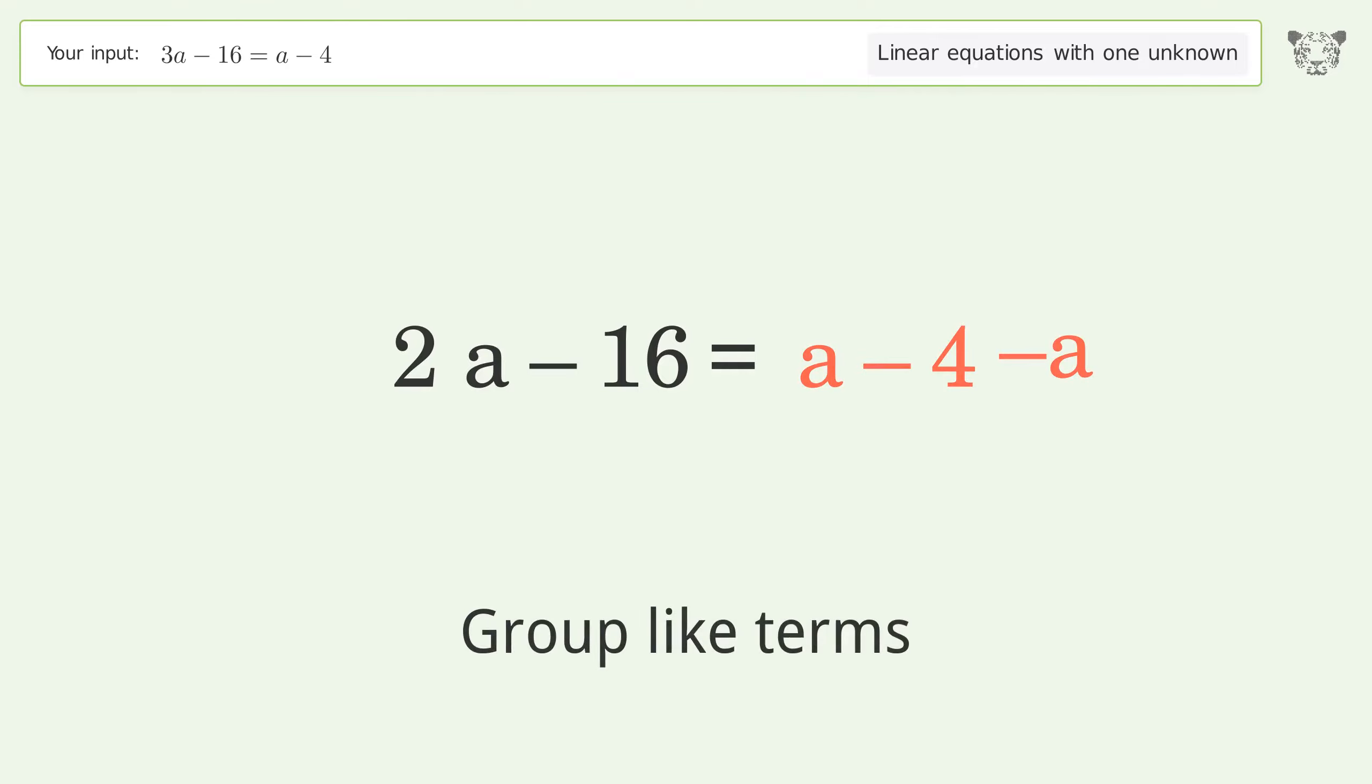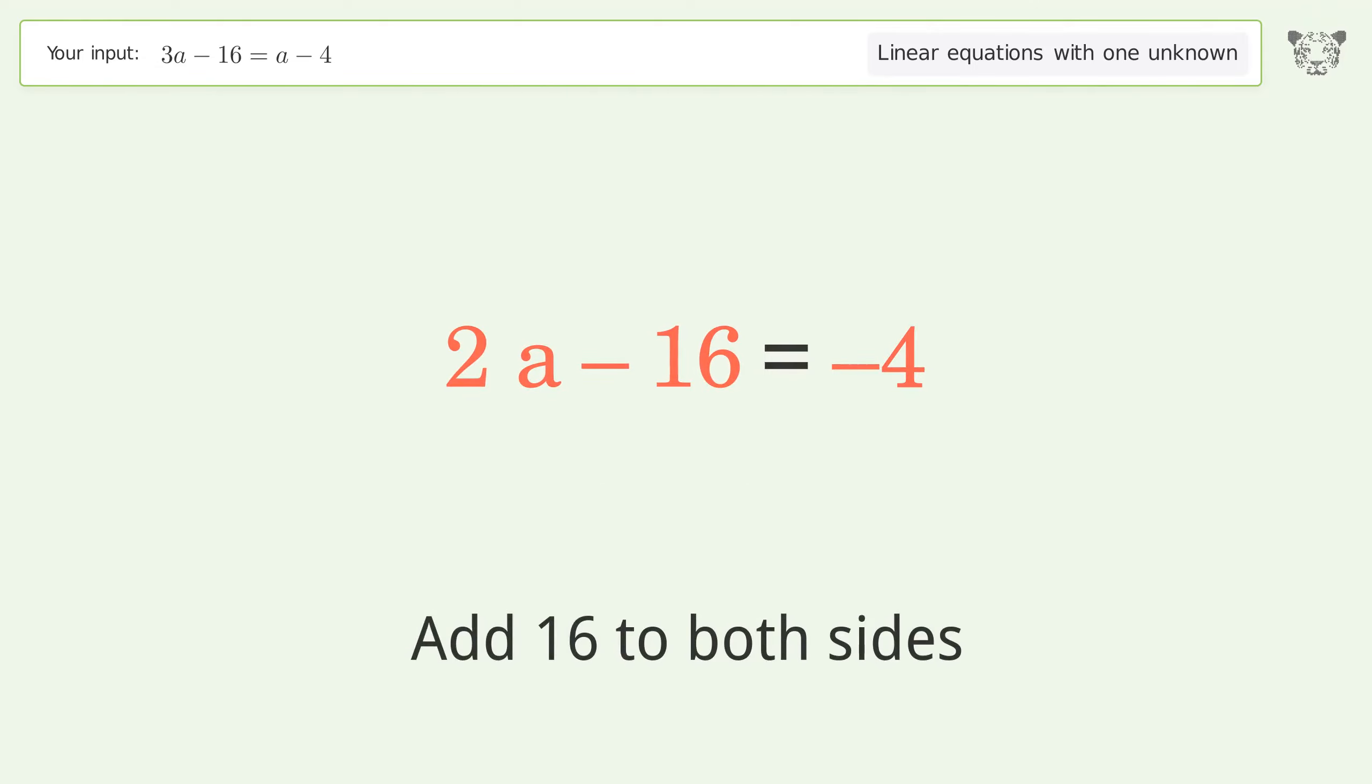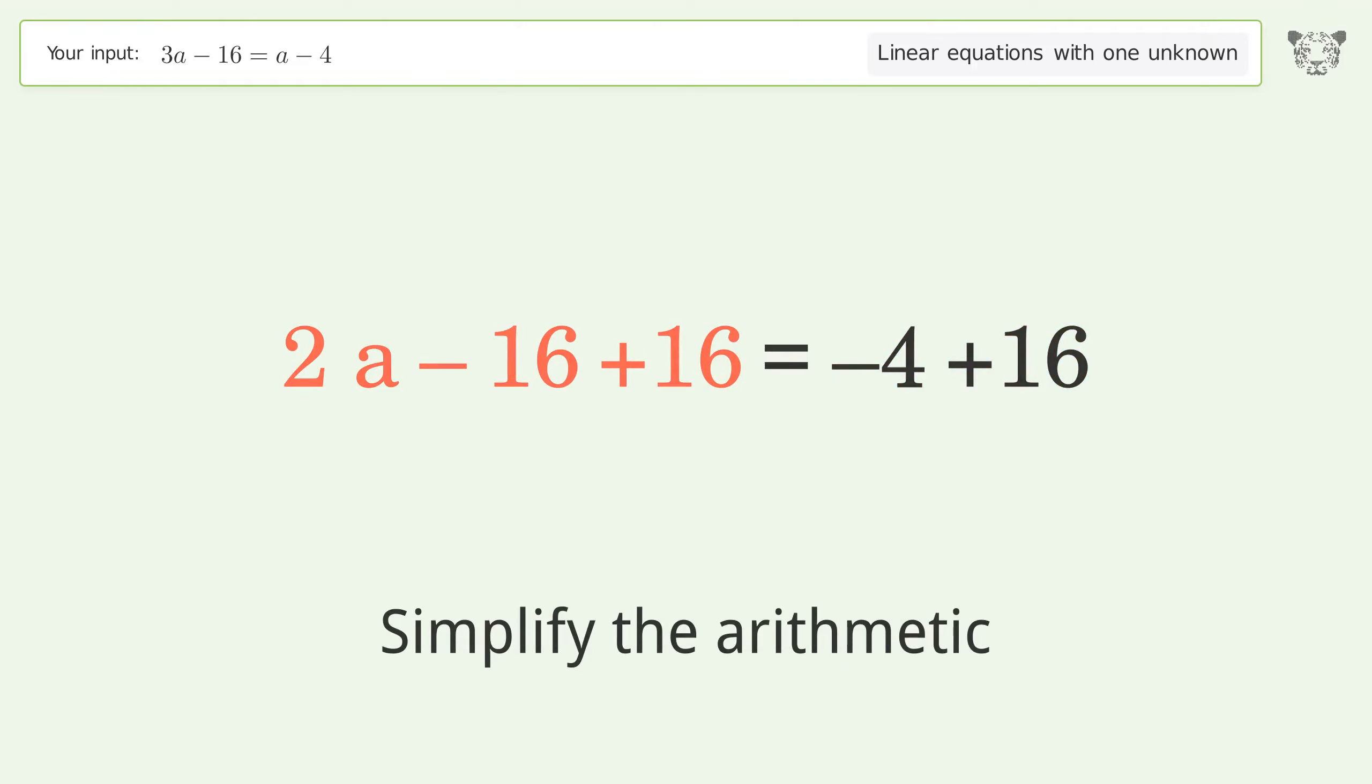Group like terms. Simplify the arithmetic. Group all constants on the right side of the equation. Add 16 to both sides. Simplify the arithmetic.